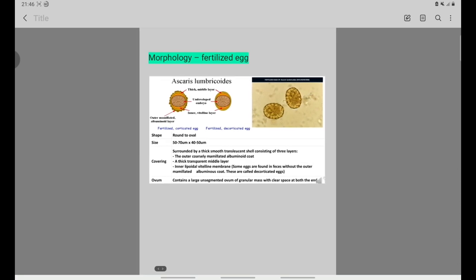We have fertilized eggs and unfertilized eggs. Here are decorticated eggs. The fertilized eggs have a round or oval shape and the size is 50 to 70 by 40 to 50 micrometers.